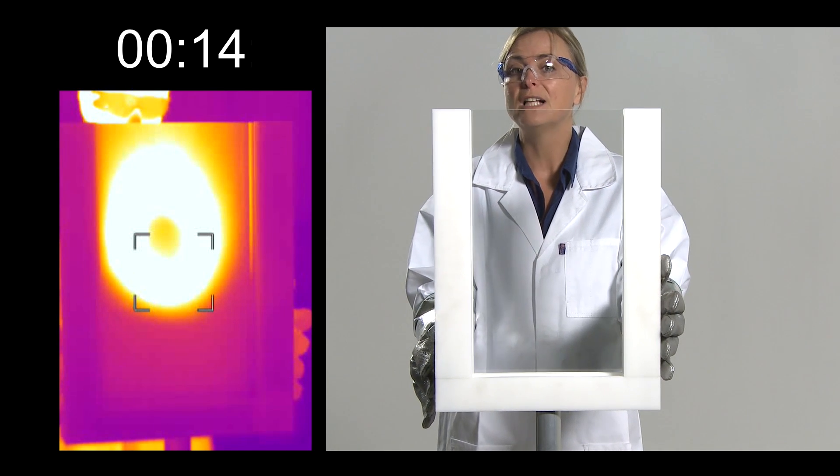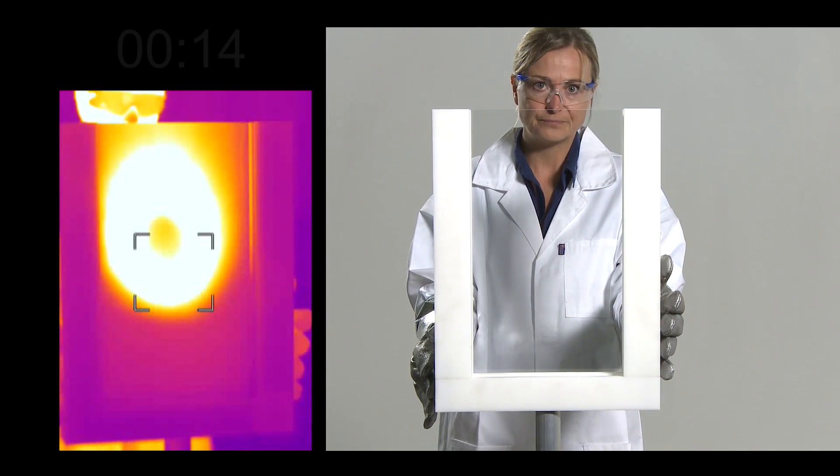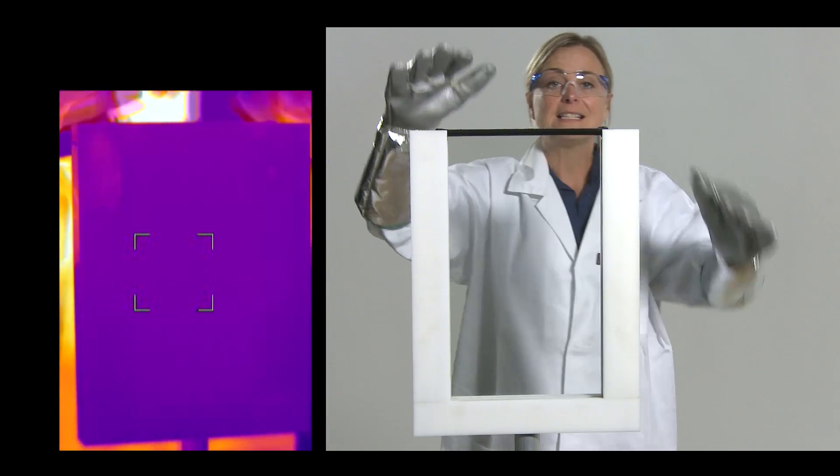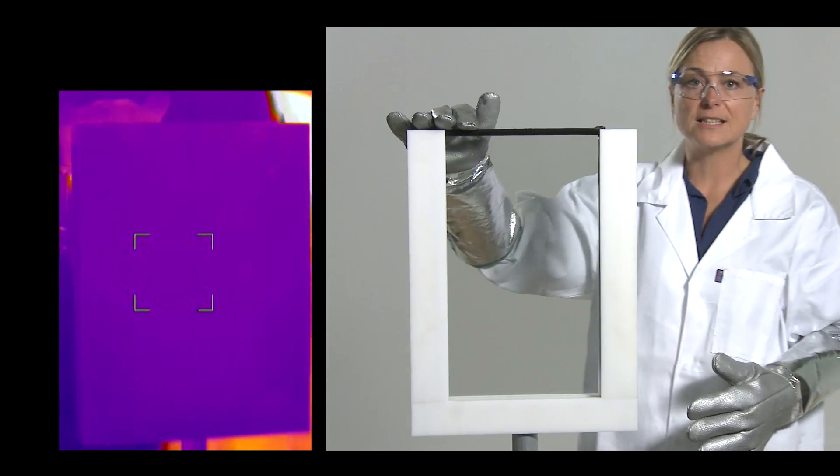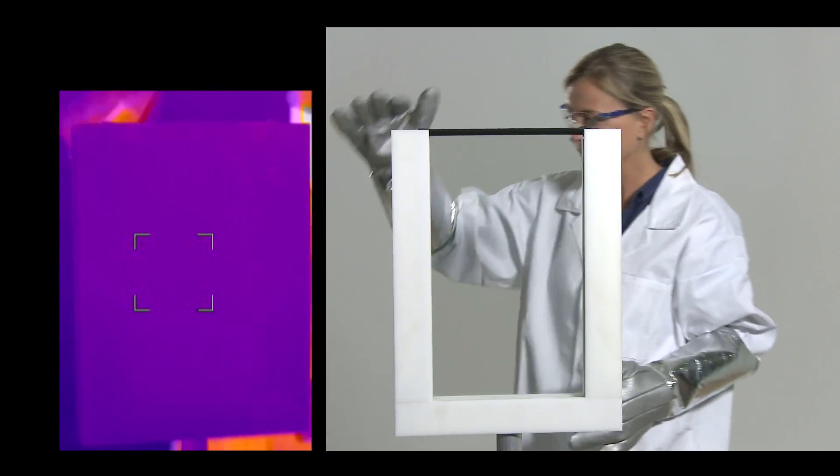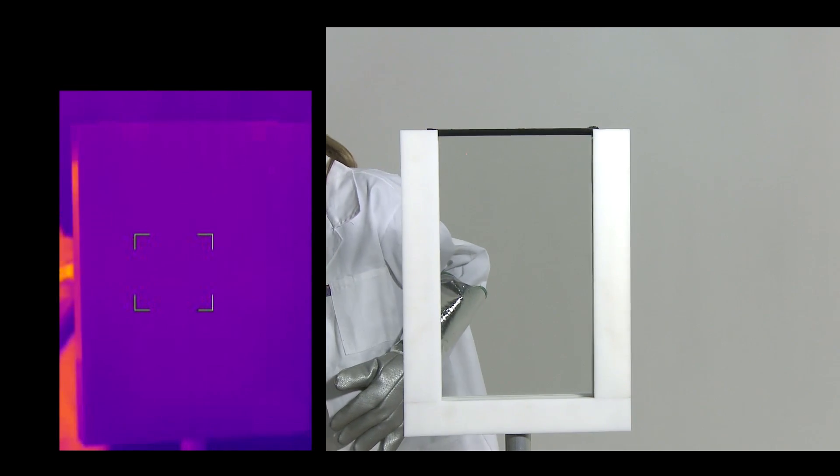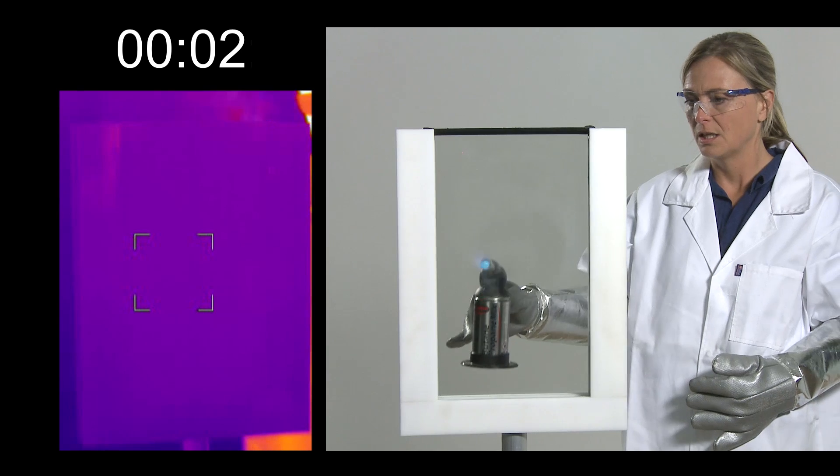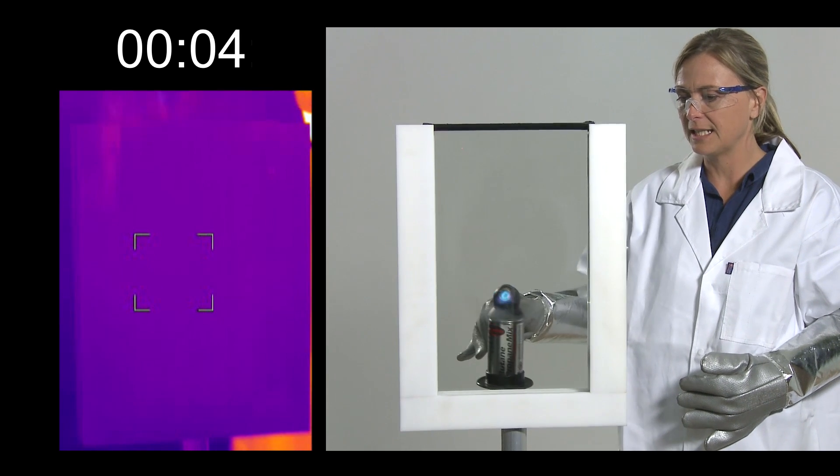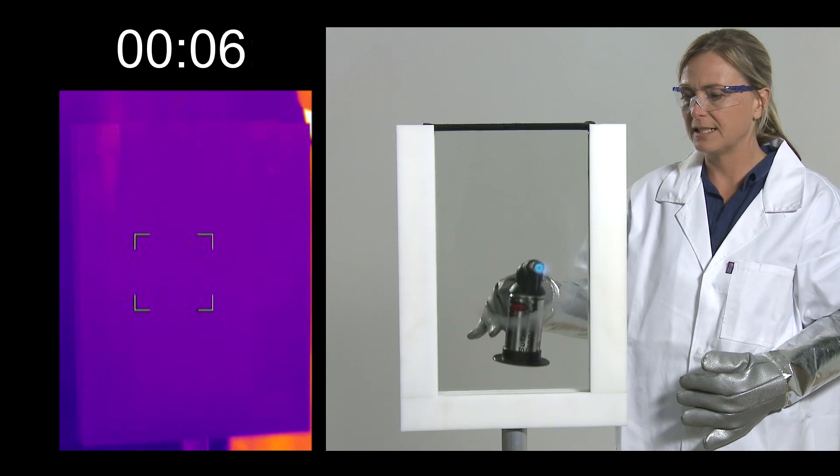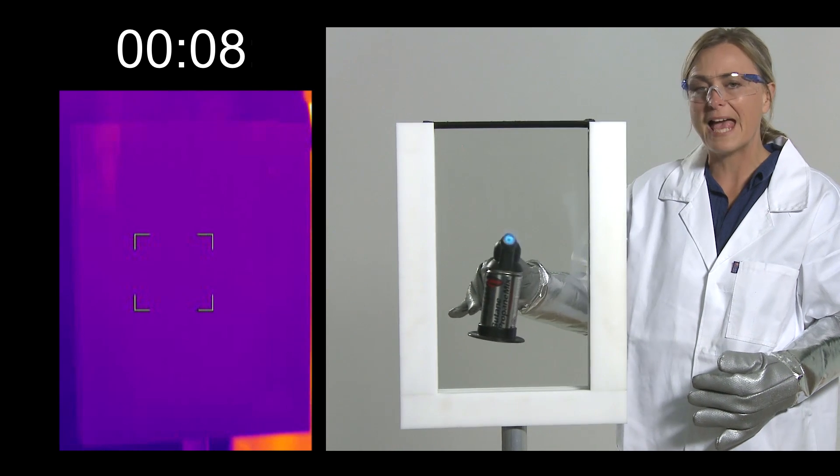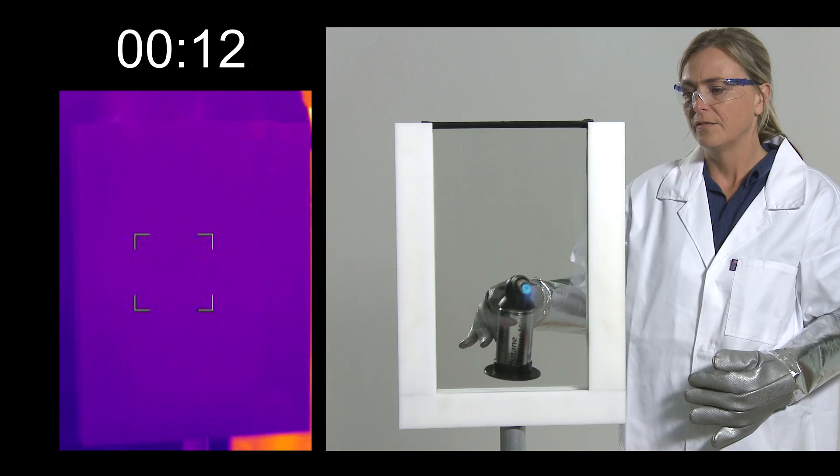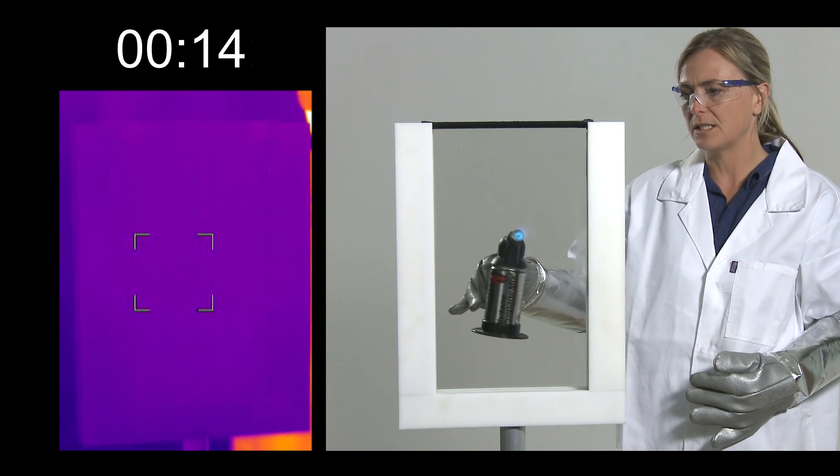This is a standard double glazed unit with a gas-filled cavity. If I take the blowtorch and start to heat this in exactly the same way, what we would expect is for it to take a lot longer for the heat to get to the other side of the window.